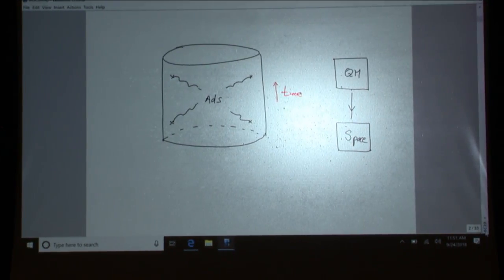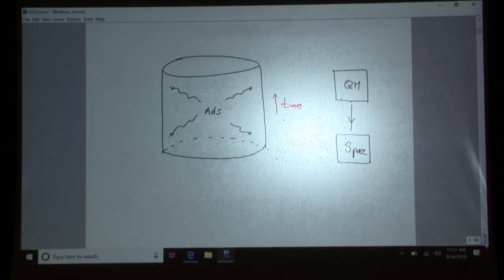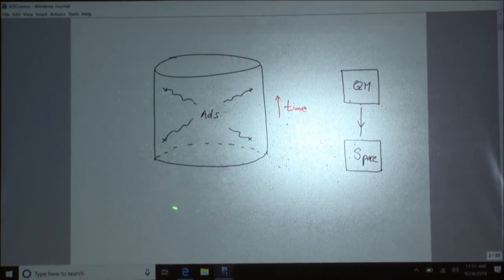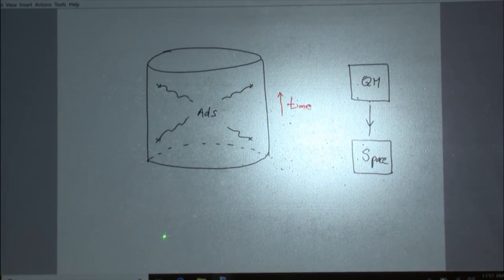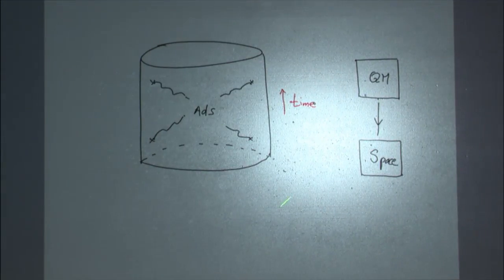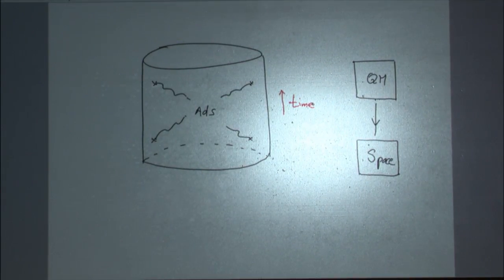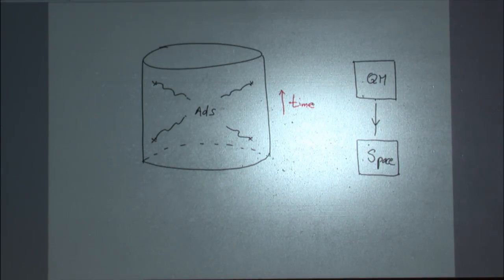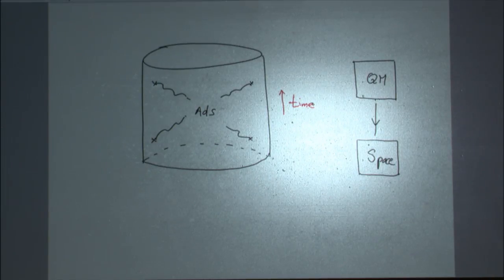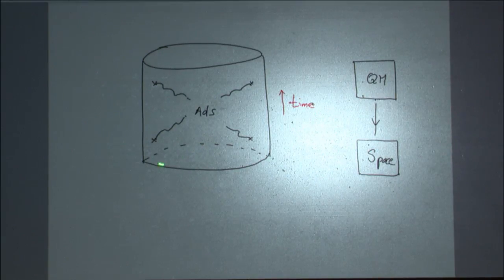Let me remind all of you of something you all know: a sort of big difference between the real world and the world in a tin can that's been studied so intensely over the last 20 years. In ADS-CFT we have this picture where the observables — like in any theory of gravity that has quantum mechanics of gravity — the observables, at least the ones we know how to talk about, live at infinity, in this case on the walls of the tin can of ADS space.